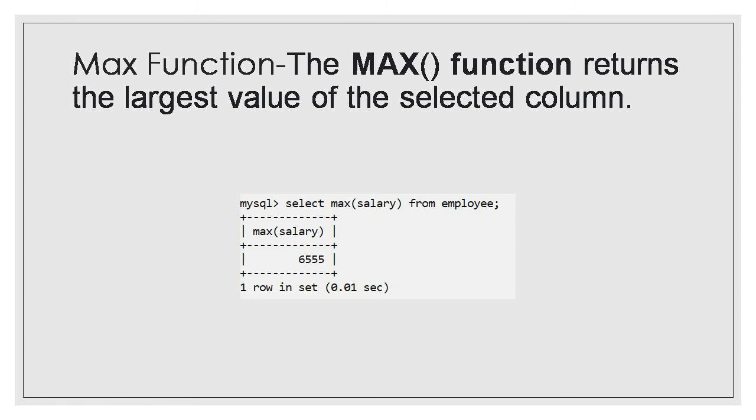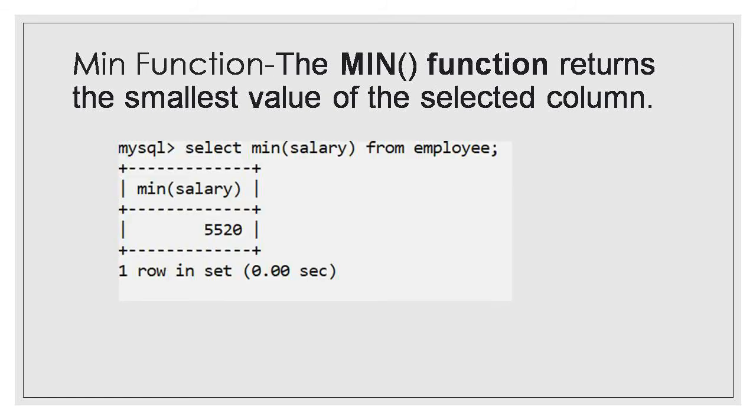ORDER BY clause is used to arrange the sequence — like the sort option on Amazon. If you want to arrange values in ascending or descending order, you will use ORDER BY. The JOIN clause is used to query two different tables at the same time. If I want records from both the employee table and the department table simultaneously, I will use JOIN.